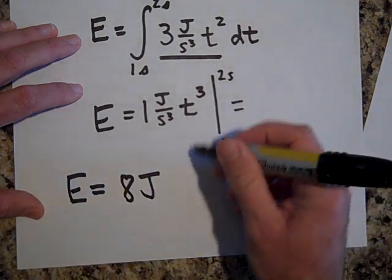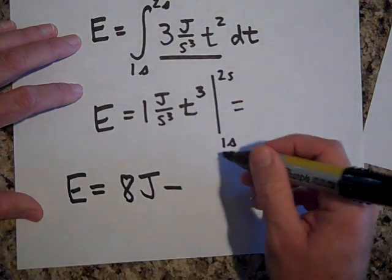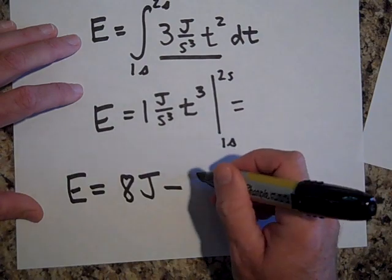Now I've got to put in the one, minus the other one. So when I put in the one, that gives me one joule.